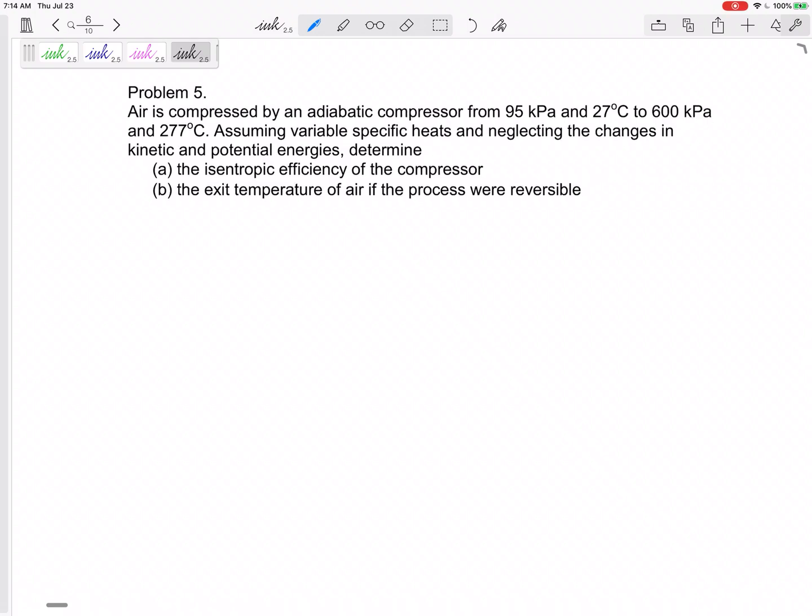Okay, here is an example of an isentropic efficiency problem. We've got air compressed by an adiabatic compressor from 95 kPa and 27°C to 600 kPa to 277°C, assuming variable specific heats and neglecting change to kinetic potential energy, determine the isentropic efficiency of the compressor and the exit temperature of the air if the process was reversible.